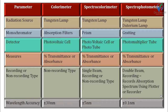Bandwidth affects accuracy. In colorimeter, bandwidth is ±30 nm. In spectro-colorimeter, it is ±5 nm. In spectrophotometer, it is ±0.1 nm. For example, ±30 nm means if lambda max of a compound is 500 nm, radiation of wavelengths from 470 nm to 530 nm will be obtained. That range is known as bandwidth.